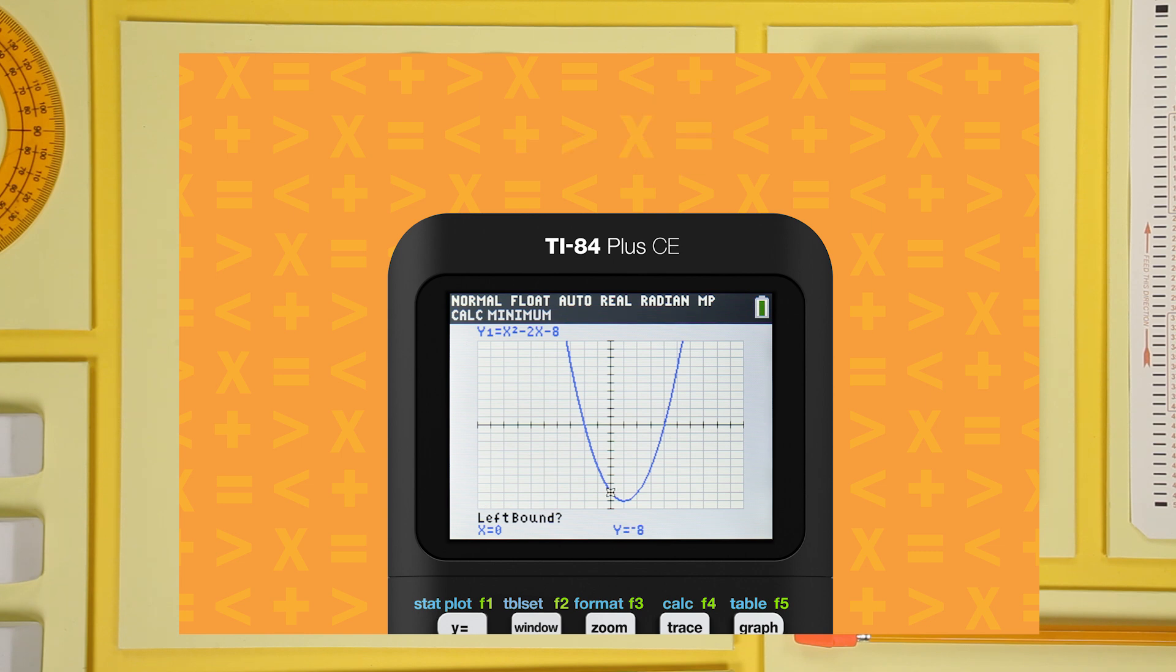The calculator will ask you to set left and right boundary values. Pick values on either side of what appears to be the minimum. For the left boundary, let's enter 0.